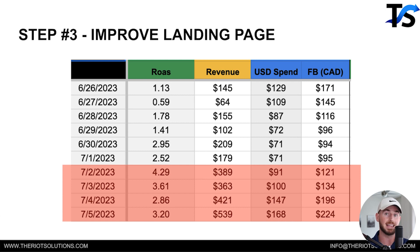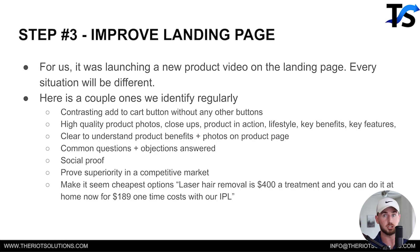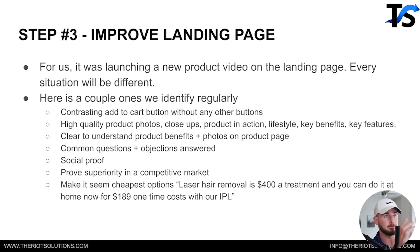Next is improve the landing page. From the 26th to 29th this was just bad ads; then on the 30th through the 1st this was a better winning ad; and from the 2nd through the 5th, we tweaked and improved the landing page we were driving traffic to. For us specifically, it was simply adding a VSL to the landing page and giving people more information about the product. It was a two-minute VSL and it increased our CVR from 5% to 7.5%.